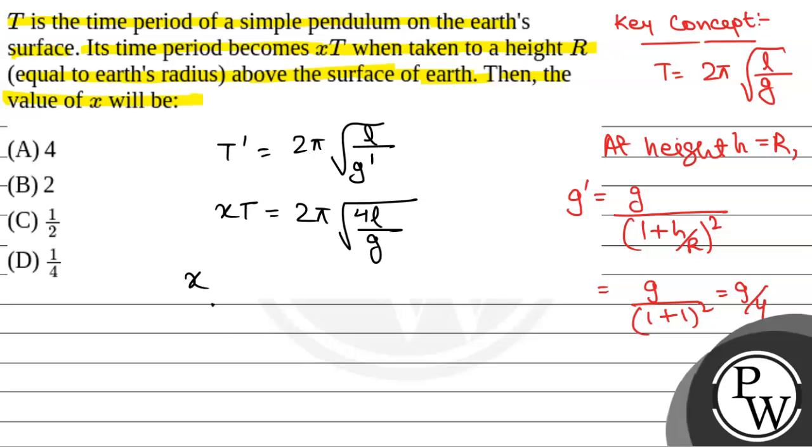Since T equals 2π√(L/G), we can write 2 times 2π√(L/G) equals X times T. From here we get X equals √4, which is 2.